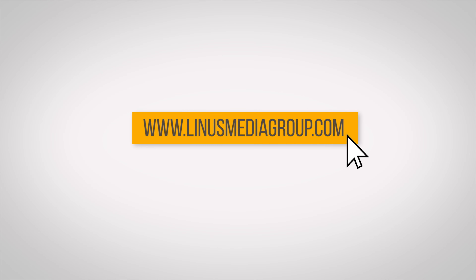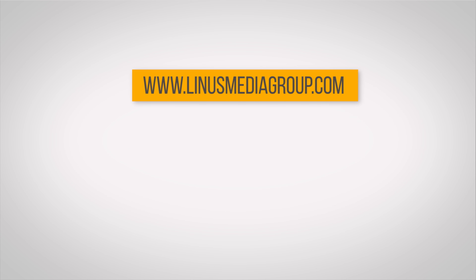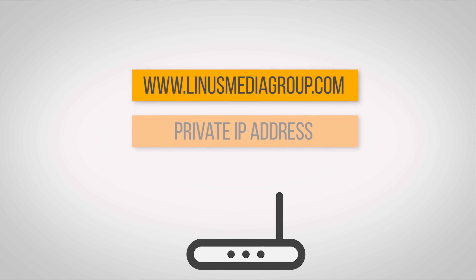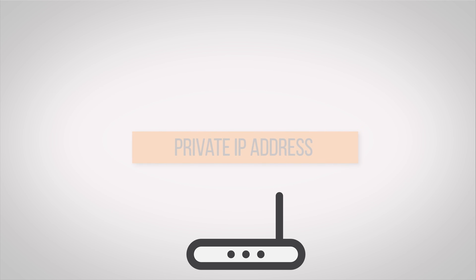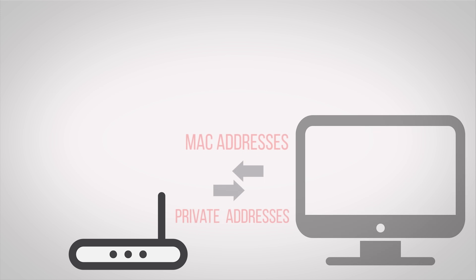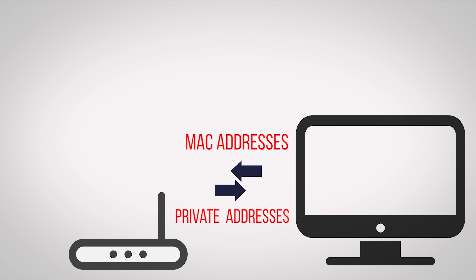Your router keeps track of outbound requests, such as when you click on a link. So when the data you want arrives at your router, it attaches the correct private IP address to the data packets, ensuring that they go to your computer or device, since all those private IPs correspond to the correct MAC address.